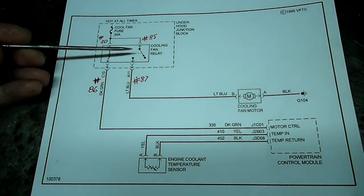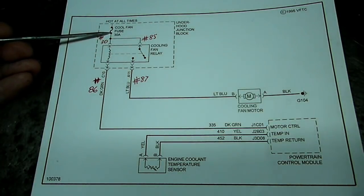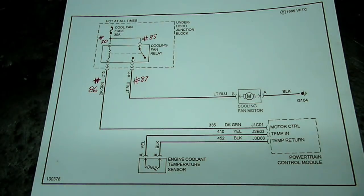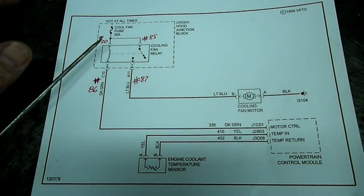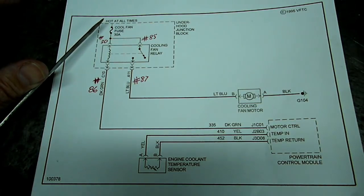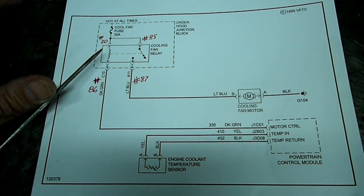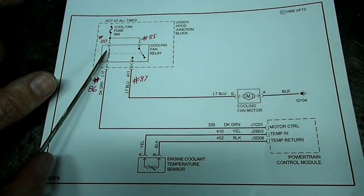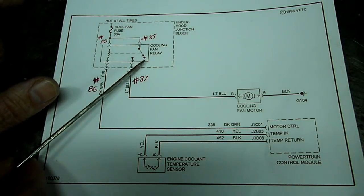Up here we have the diagram for a relay. Right here we have a diagram for a fuse. Now the way this system functions is that voltage comes into the relay. You can see right here it says hot at all times. Voltage comes through the fuse into the relay. Inside the relay you can see a symbol for a coil, and then over here we have a symbol for a switch inside the relay.